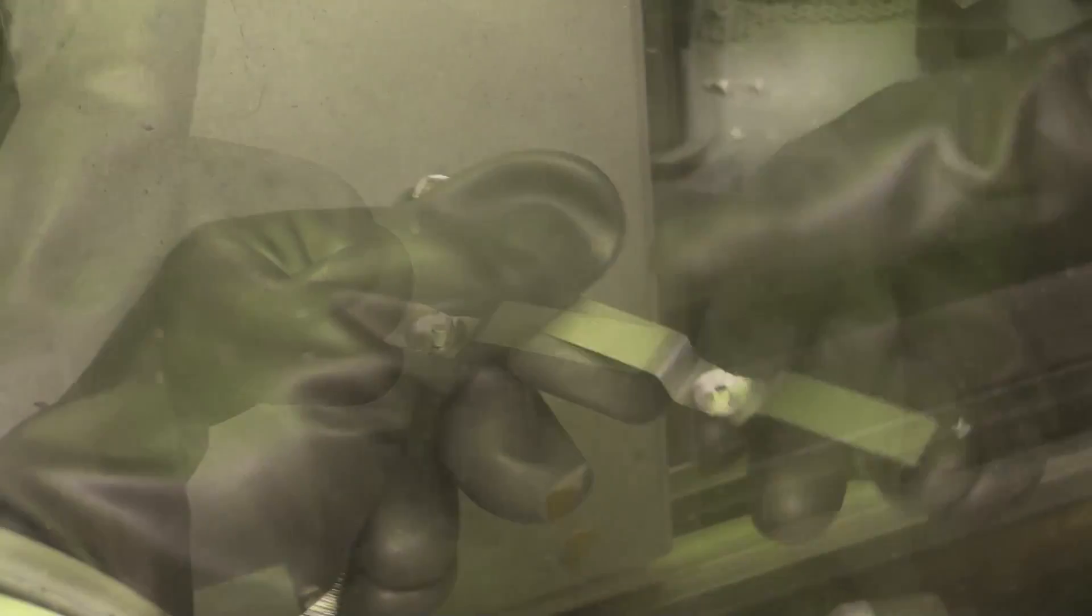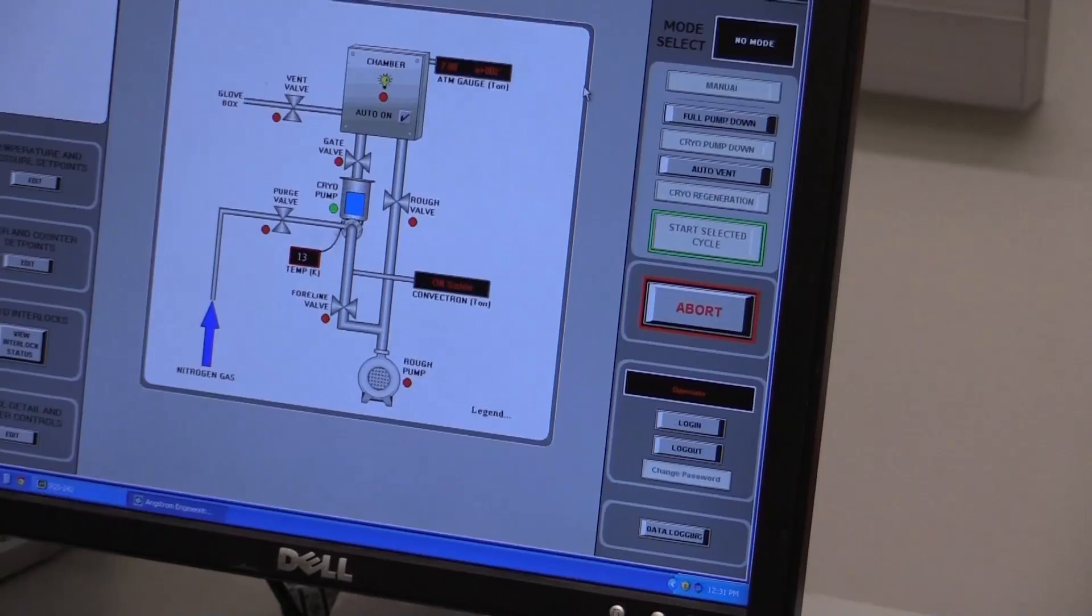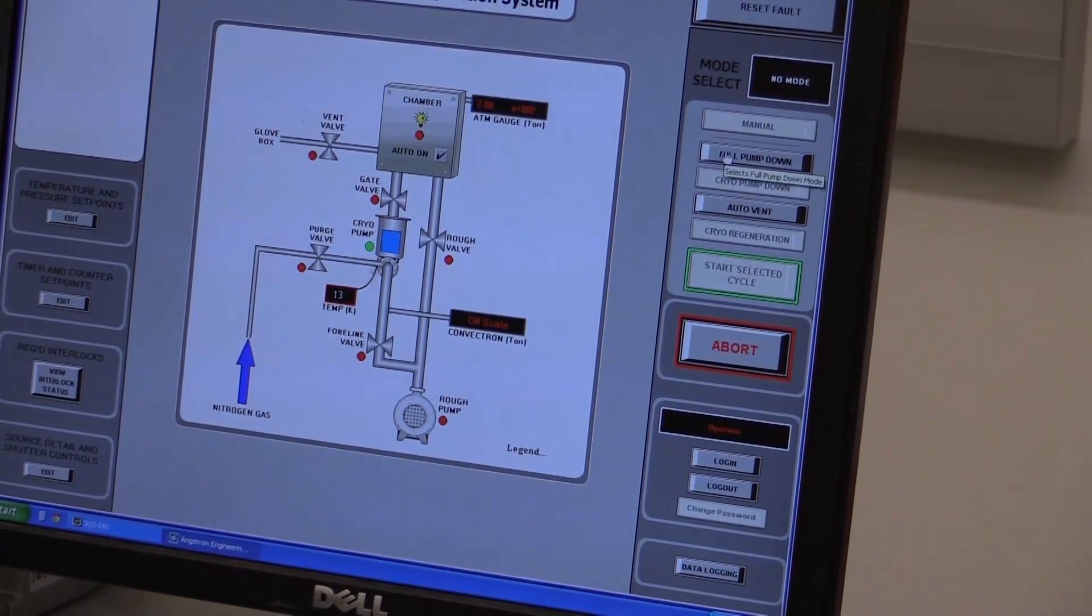We then load gold pellets for the top contact into a tungsten evaporation boat. We secure the boat onto metal posts which will pass current through the tungsten boat, heating the gold pellet through resistive heating. We then pump the evaporation chamber down to a pressure less than 10 to the negative 6 torr, which will allow the metal to vaporize under resistive heating.